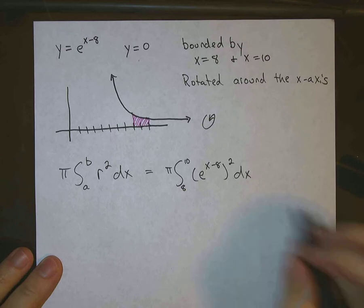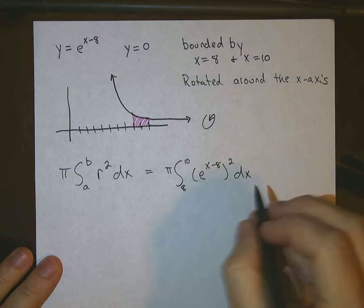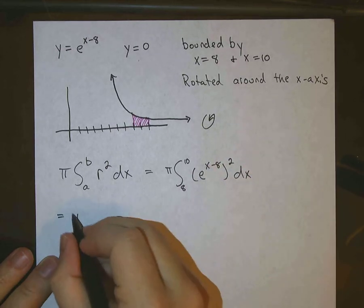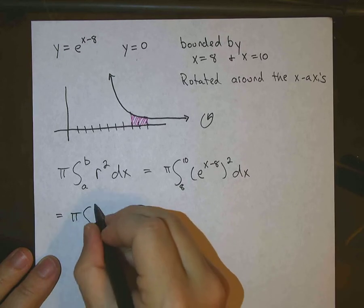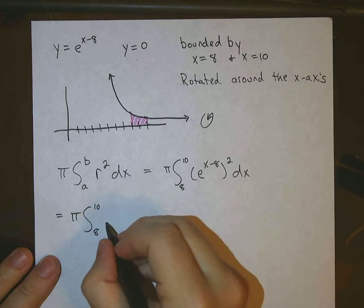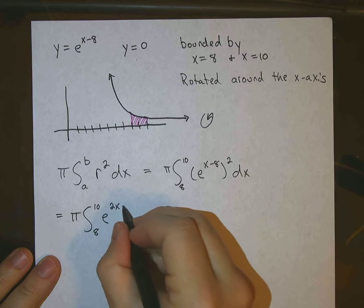Okay, now we want to go ahead and distribute this square. So that becomes pi from 8 to 10, the integral from 8 to 10, e to the 2x minus 16 dx.